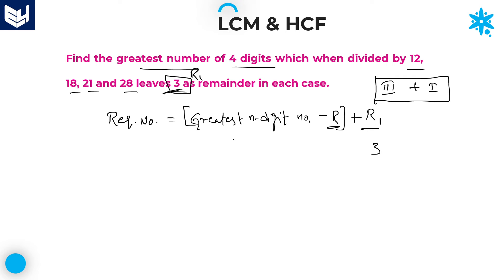The value of r1 is directly given in the problem, which equals 3. The greatest four-digit number is 9999. We now have two of the three variables. Next, we need to calculate the value of the remainder r by dividing the greatest four-digit number with the LCM of the given numbers.